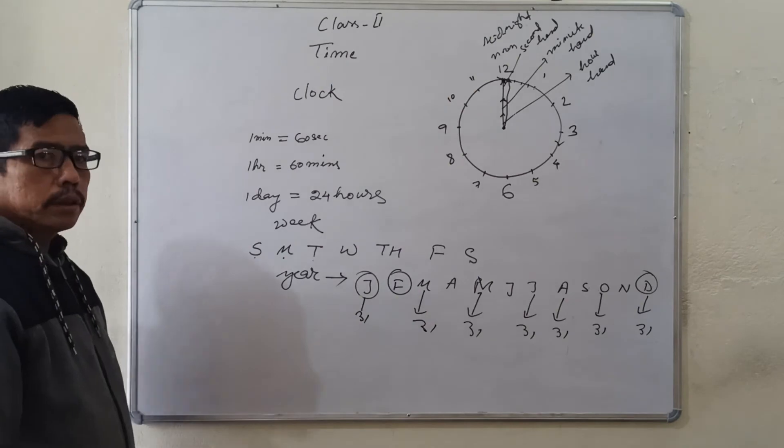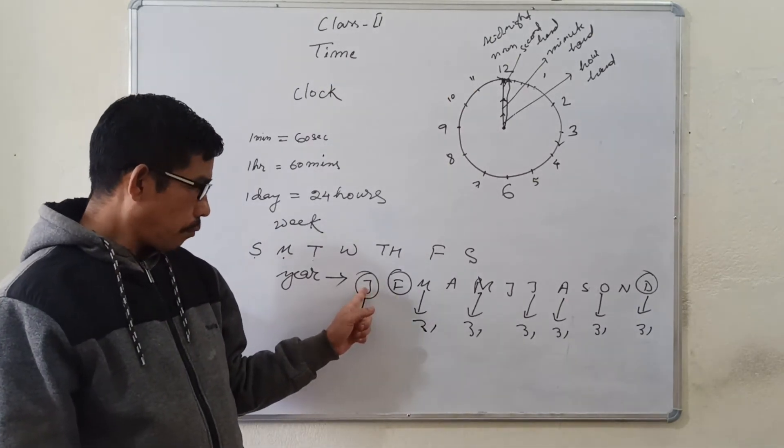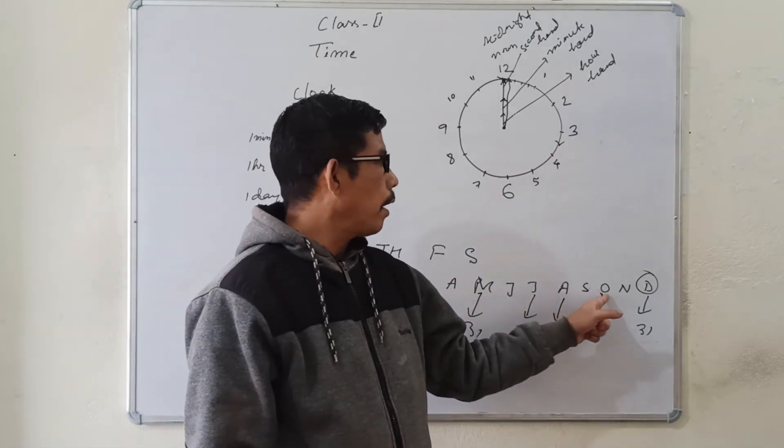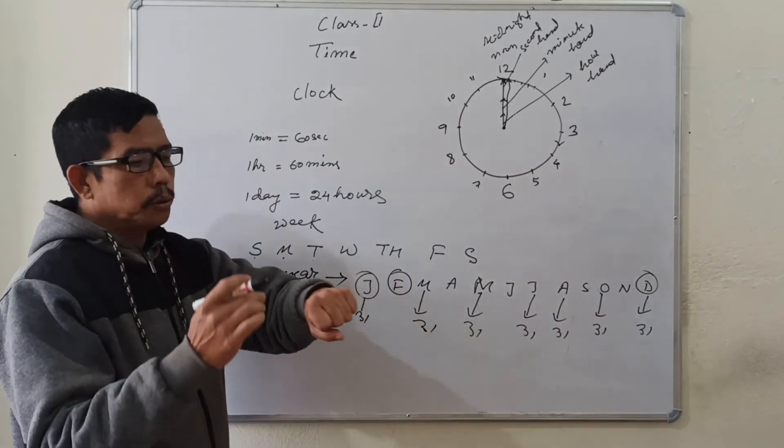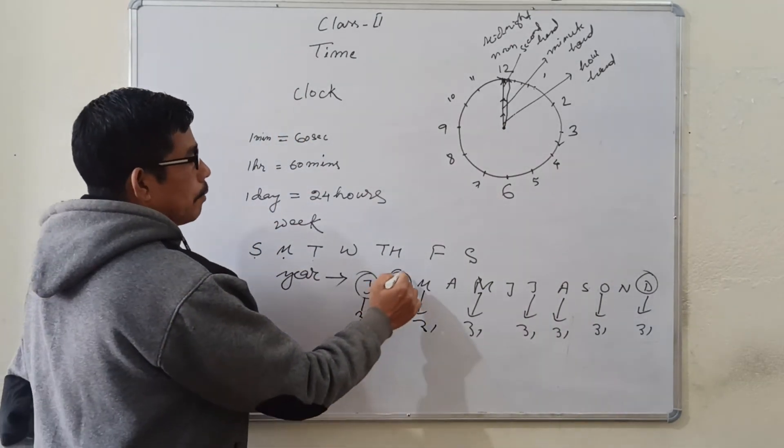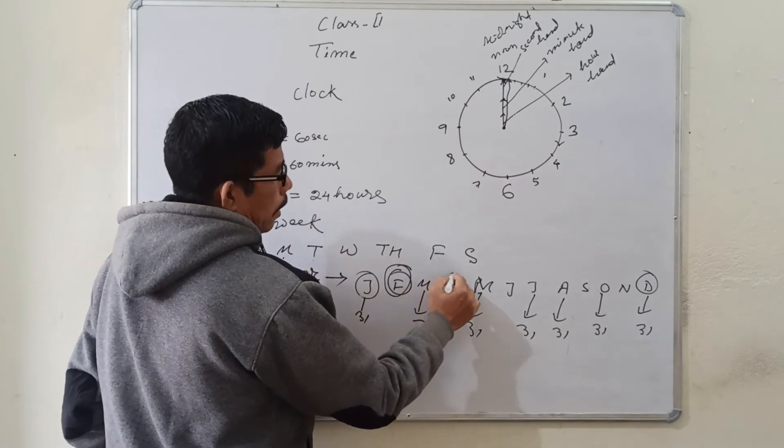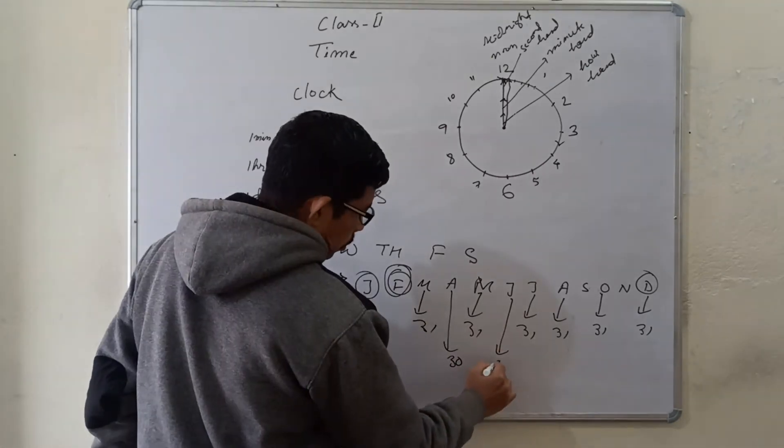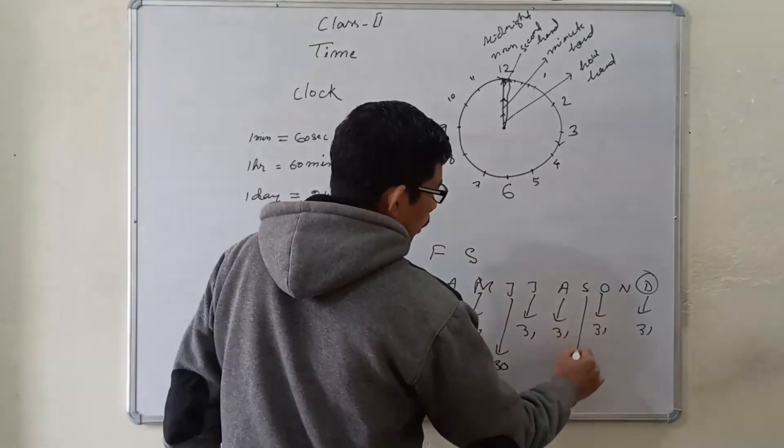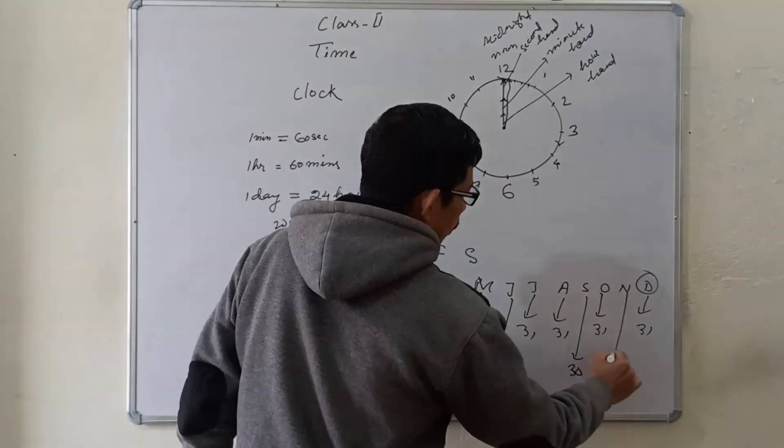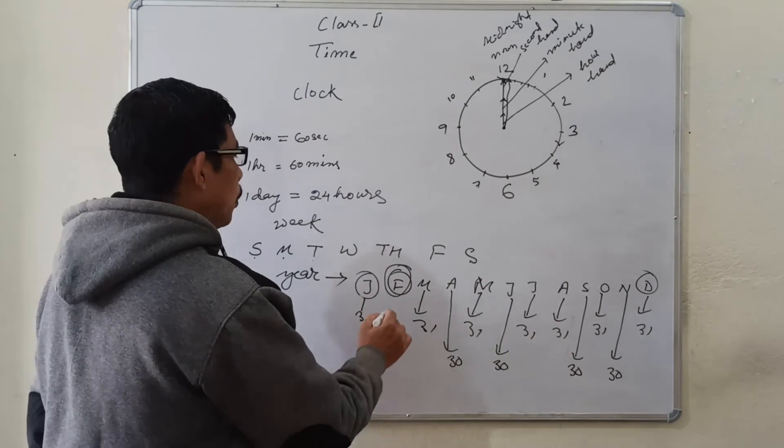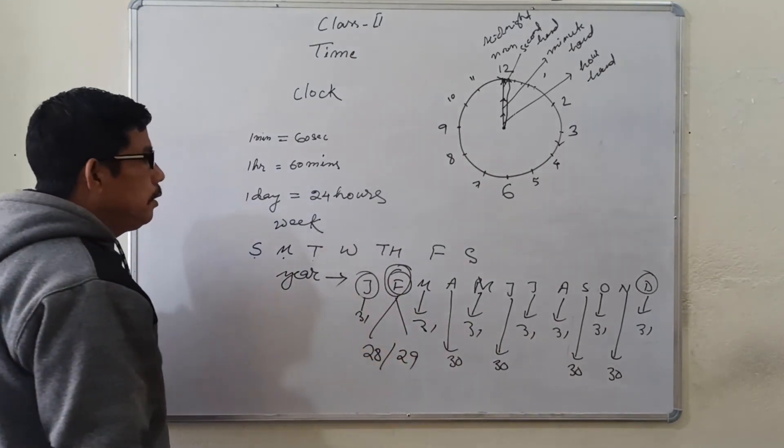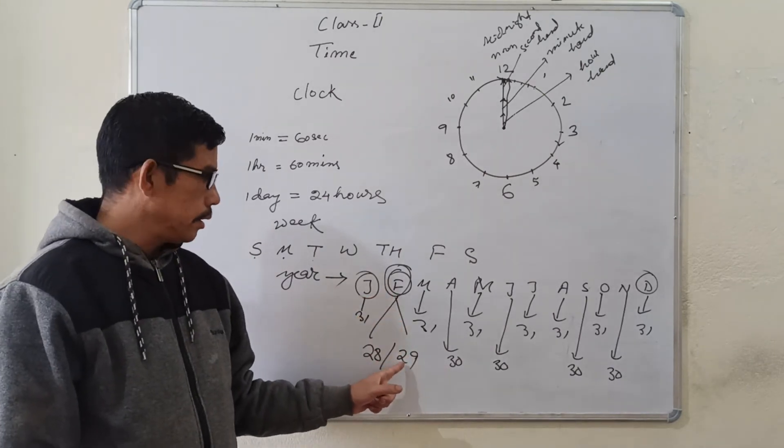So, what are the months having 31 days? January, March, May, July, August, October and December. And, the remaining ones which fall on the depression. That is, excluding February, April will have 30, June 30, September 30, November 30. And February sometimes has 28 and sometimes 29. If it is a leap year, 29. Otherwise, 28.